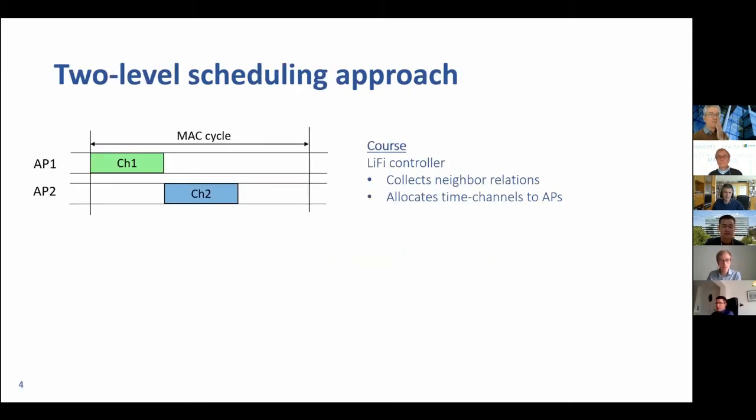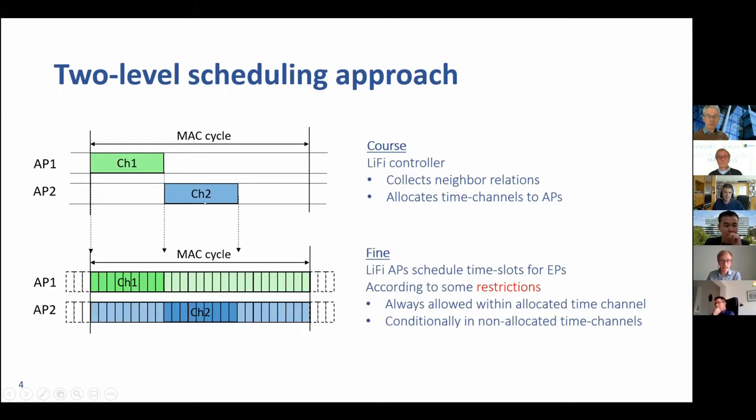We are looking at the two-level scheduling approach, where we have a controller dealing with the coarse interference problem. The controller collects the neighbor relations and also allocates time channels to the access points. Access point one gets the green channel, access point two gets the blue channel. And then the access points also get some responsibility. They get the responsibility to schedule the time slots for their endpoints.